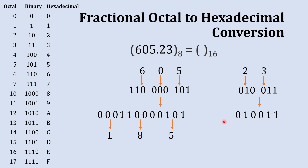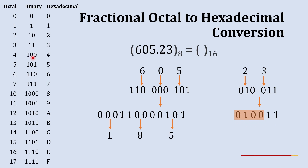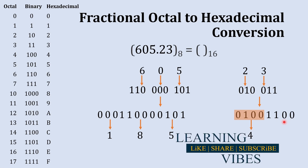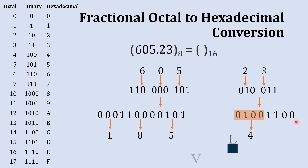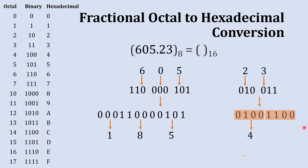We create sets of four digits starting from the left for the fractional part. The first set is 0100, which is 4 in hexadecimal. We only have two digits remaining, so we add two zeros on the right-hand side — for the fractional part, adding zeros on the right does not change the magnitude. The set 1100 is C in hexadecimal. Combining gives us .4C.